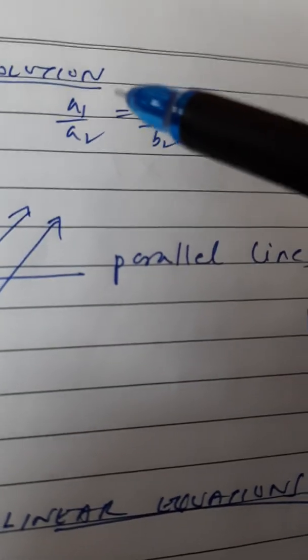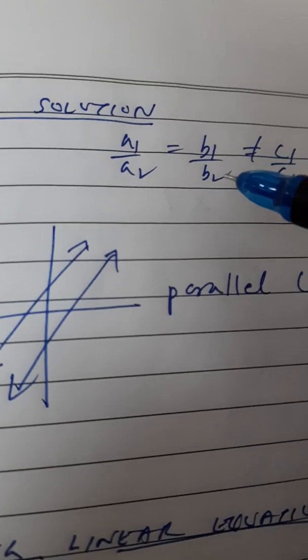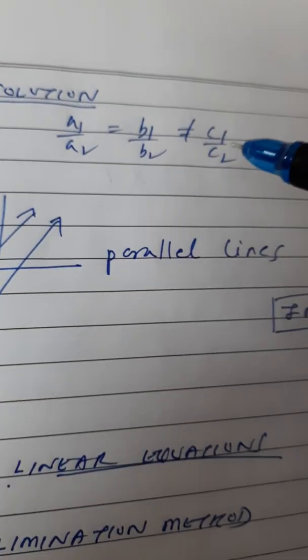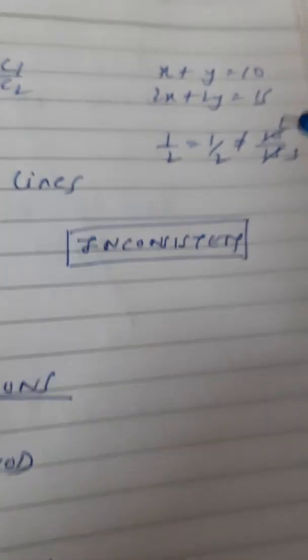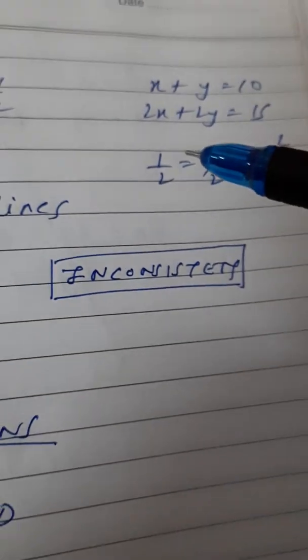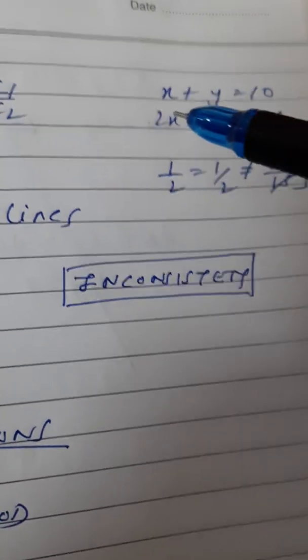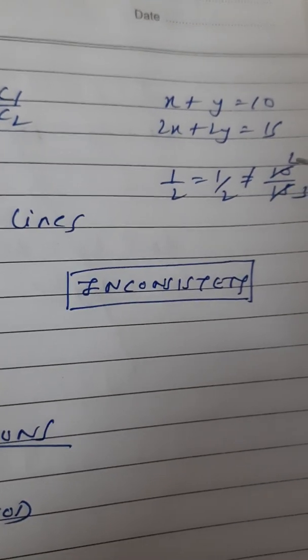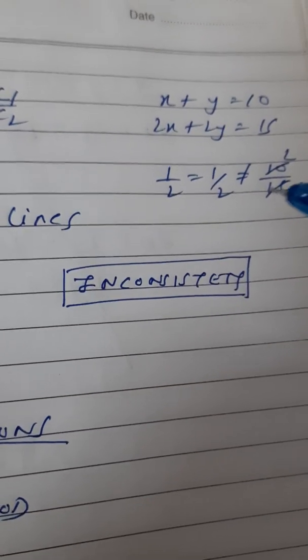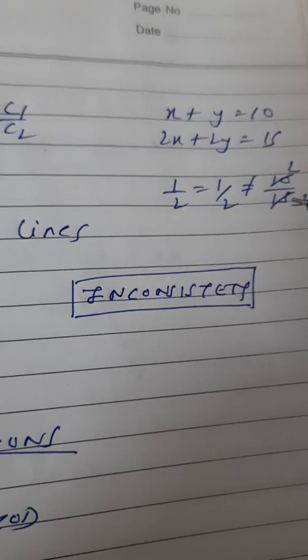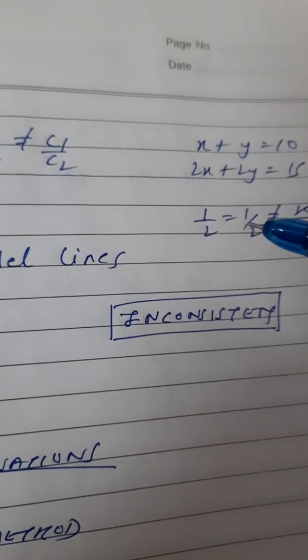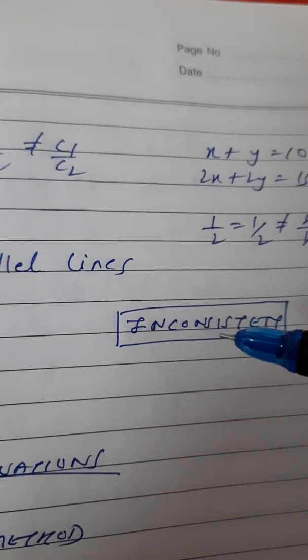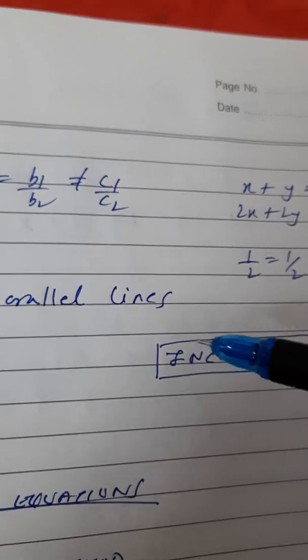And the last case is when we have no solution. Note down this condition. A1 by A2 equal to B1 by B2 not equal to C1 by C2. This is no solution. Example here I have given. X plus Y is 10. 2X plus 2Y is 15. So, A1 by A2 is what? 1 by 2. B1 by B2 1 by 2. C1 by C2 is 10 by 15. That is 2 by 3. So, these two are equal but not equal here. So, this is called inconsistent.